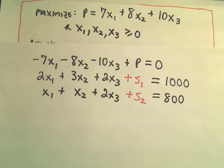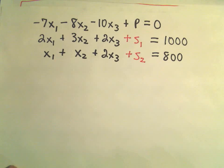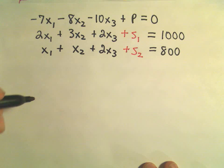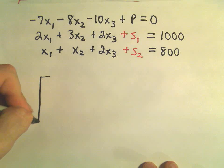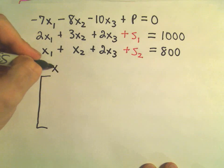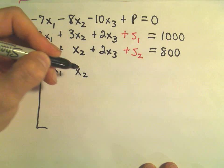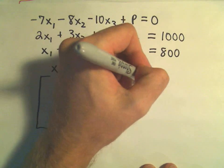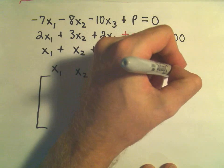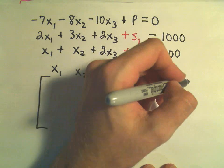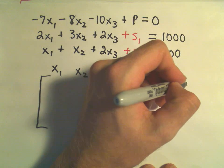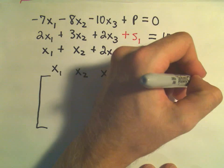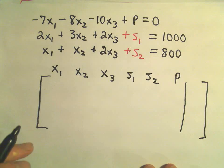Okay, so from this we have to produce our simplex tableau, and this is the thing we're going to start doing row reduction on. So I'm going to label my variables: we've got x1, we've got x2, we've got x3, we've got s1, we've got s2.